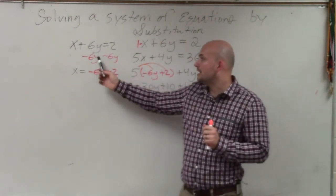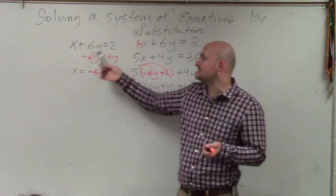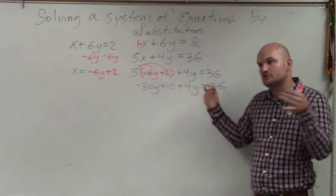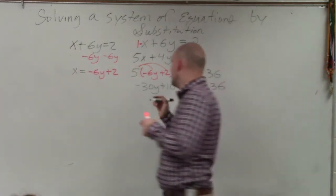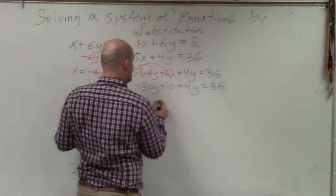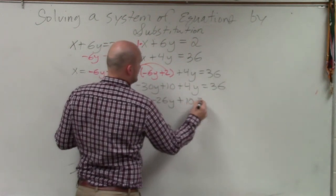Over here, I had to subtract 6y on both sides. Here, though, they're on the same side. So you just combine them. So I have a negative 30y plus 4y is going to be a negative 26y plus 10 equals 36.